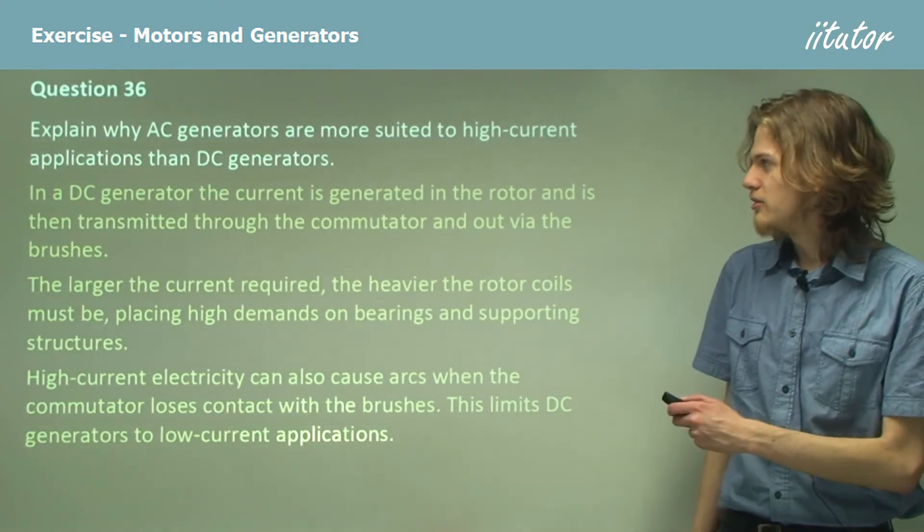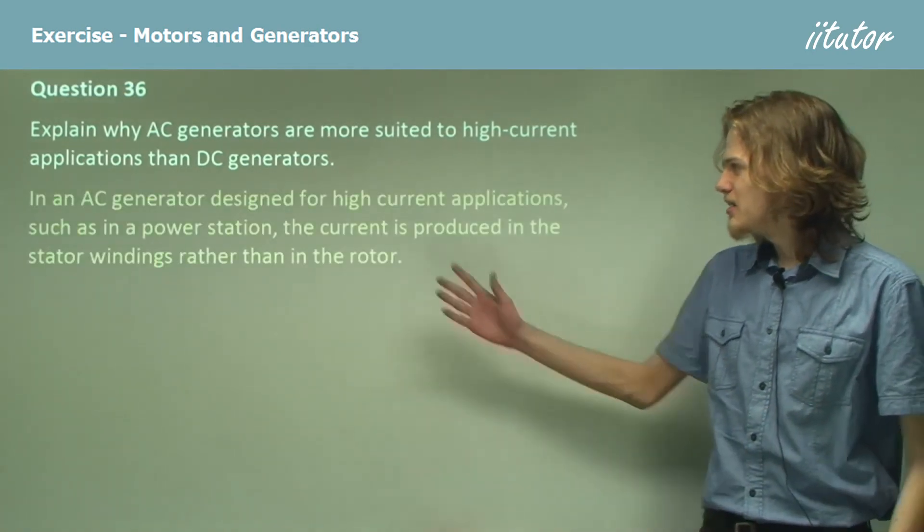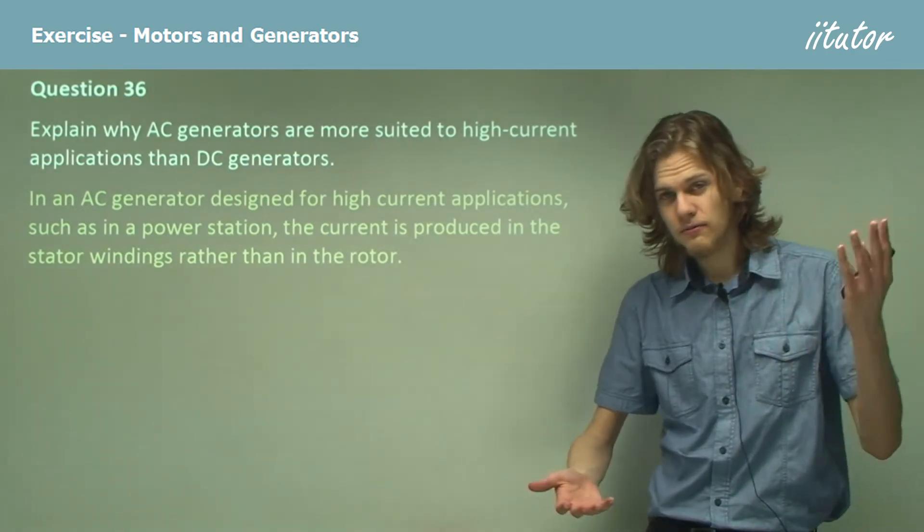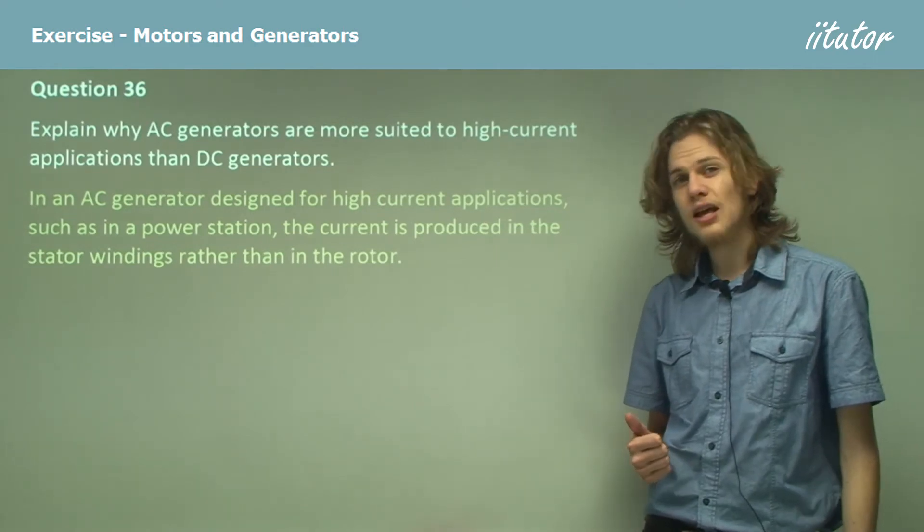So that's DC generators. How about AC generators? In an AC generator designed for high current applications, such as in a power station, the current is produced in the stator windings rather than in the rotor.